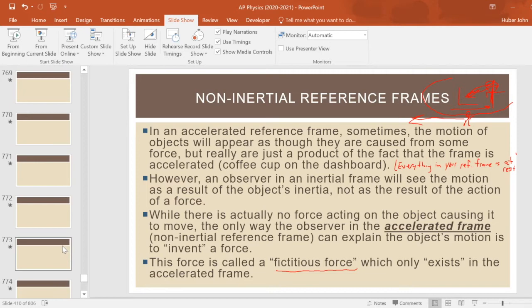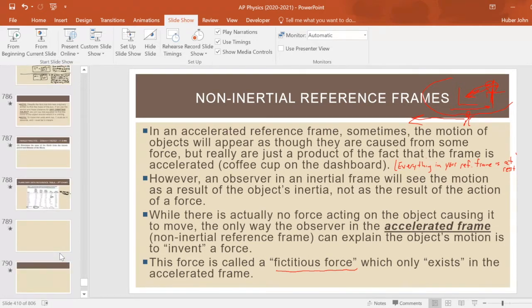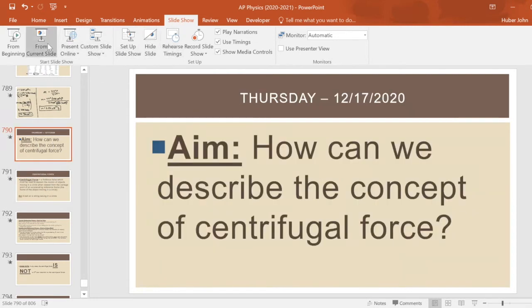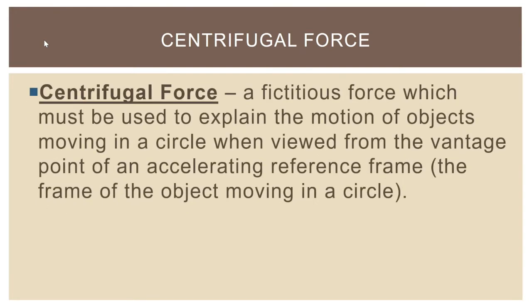Why are we talking about fictitious forces when discussing uniform circular motion? Because when an object is moving in a circular path, it's accelerating. The centrifugal force is just the fictitious force we need to invent for circular motion. Its definition: the centrifugal force is a fictitious force which must be used to explain the motion of objects moving in a circle when viewed from the vantage point of an accelerating reference frame — specifically, the reference frame of the object moving in the circle.